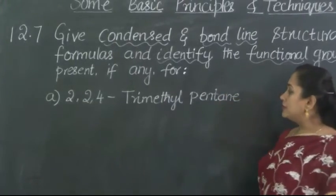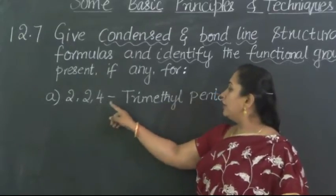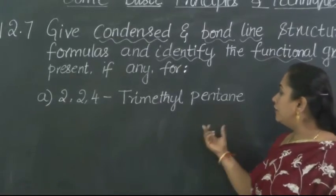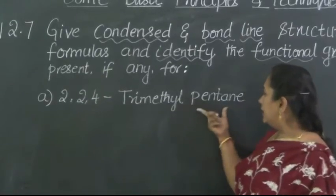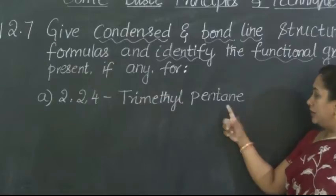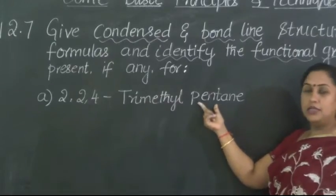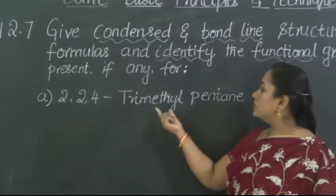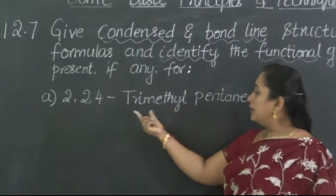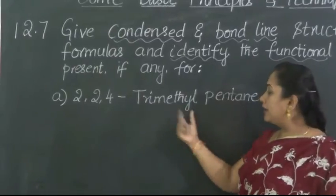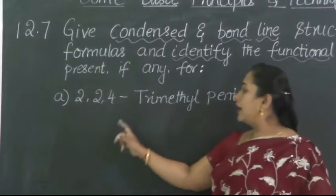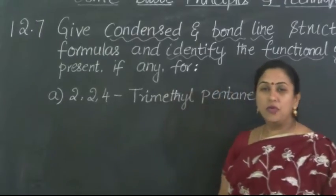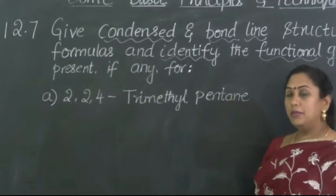The compound given to us is 2,2,4-trimethylpentane. As we can understand from the name, this is a saturated hydrocarbon — 'pent' means it contains 5 carbon atoms. It is also having methyl groups — 3 methyl groups, so therefore trimethyl. With respect to the second carbon atom there are 2 methyls attached, and with respect to the 4th carbon atom there is 1 more methyl group attached.